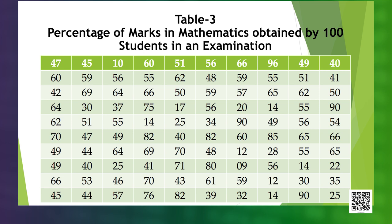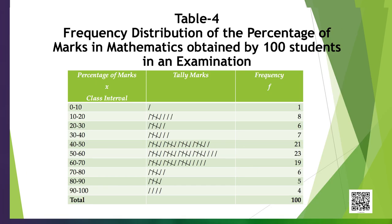Let us now see the construction of frequency distribution. Look at the table where we are given the percentage of marks in mathematics obtained by 100 students in a certain examination. As we have noted before, there are several alternative ways of choosing the number of classes, their size, and their class limits.